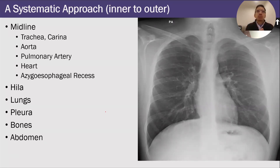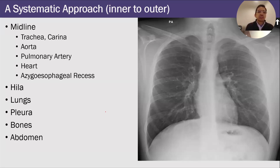For example, if I open up a chest x-ray and I see something very obvious, like a big lung cancer in one of the lungs, I'm still going to try to follow my approach and only look at the lung cancer when I get to that part of the x-ray.